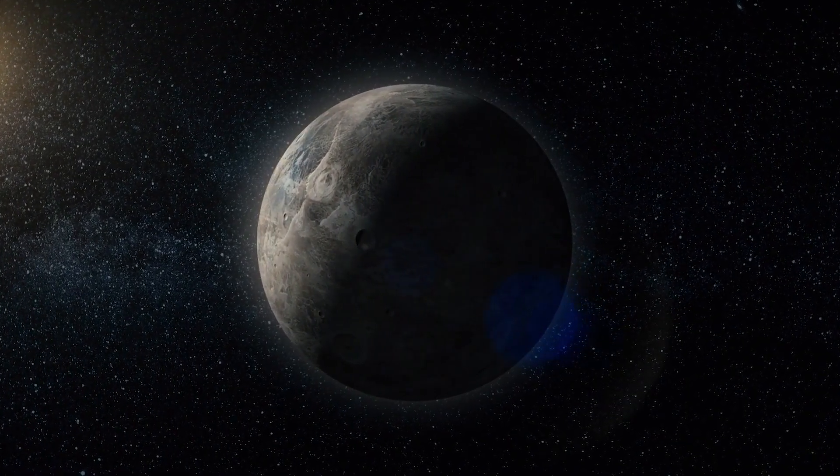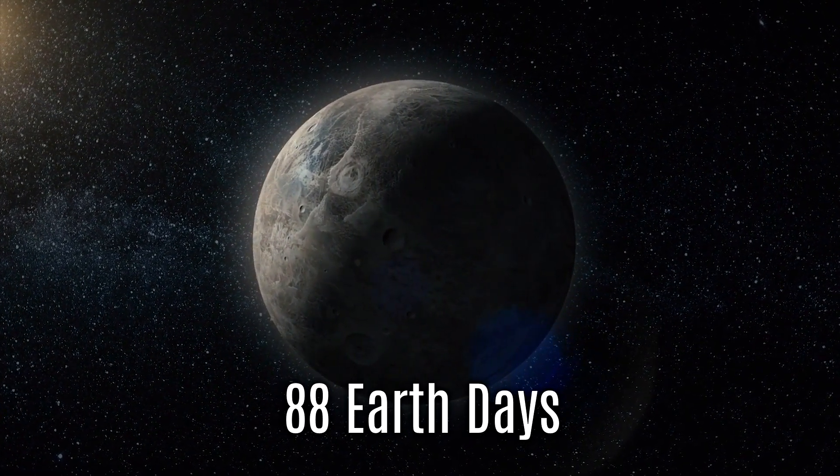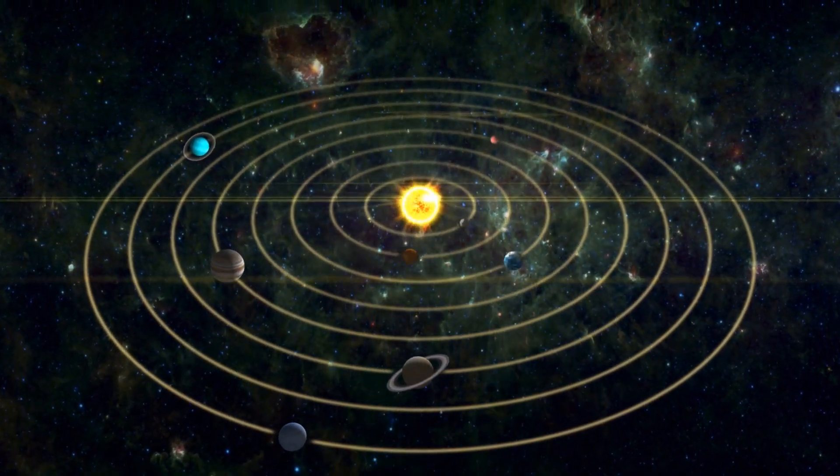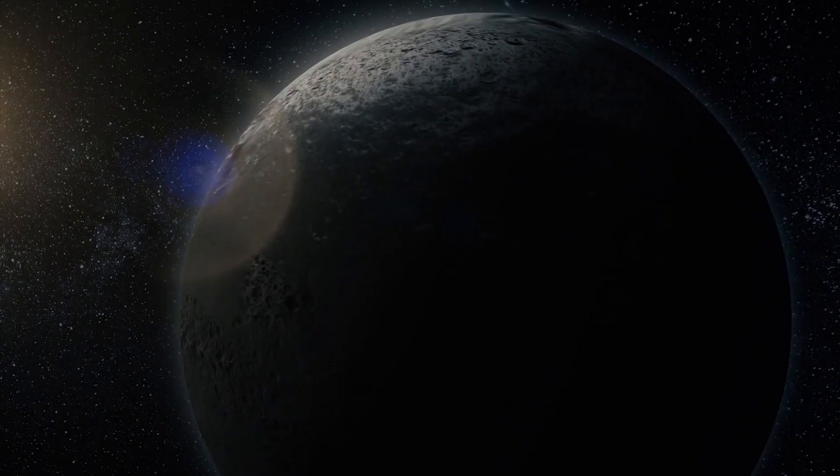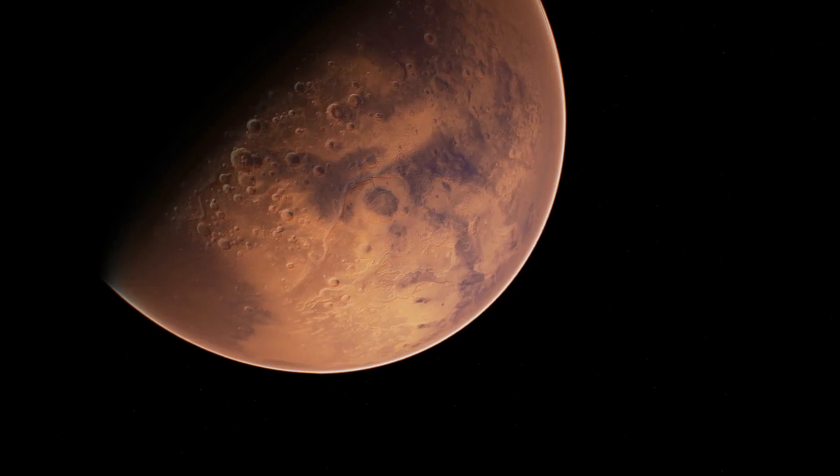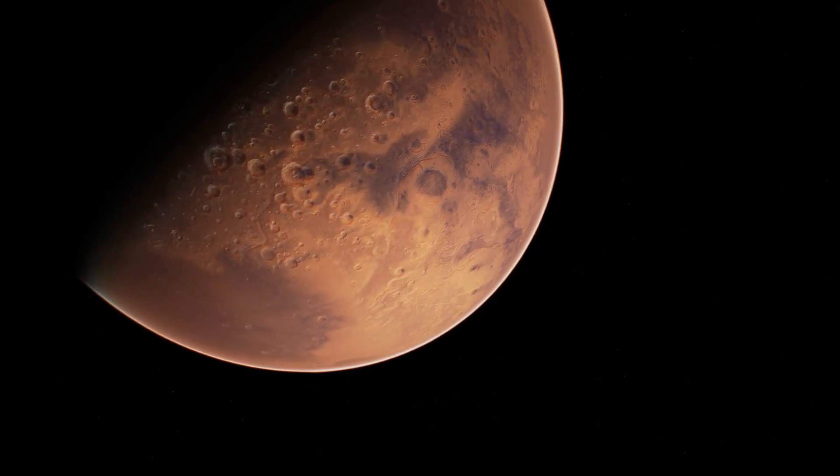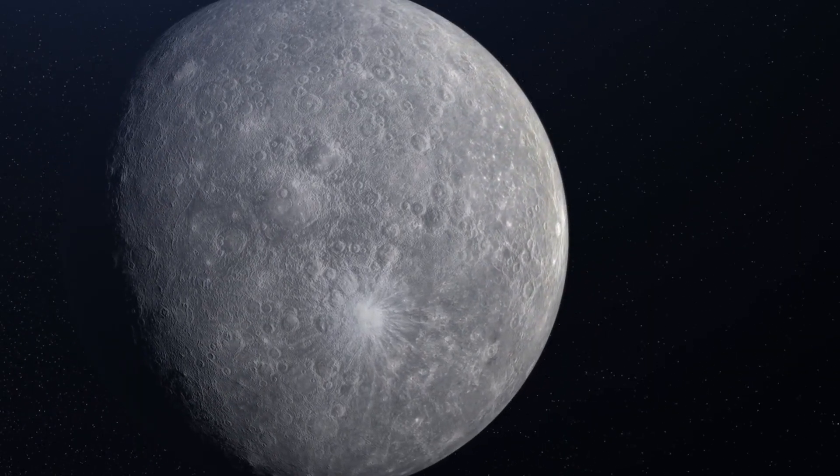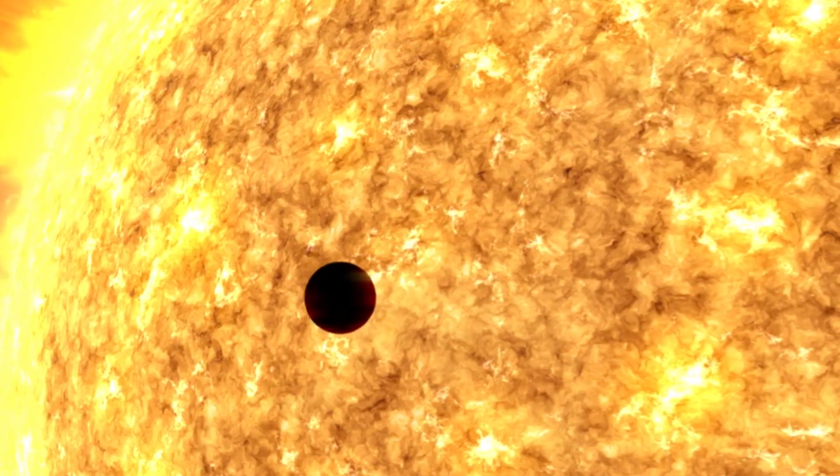To break it down, Mercury completes an orbit around the sun in just 88 Earth days. Because of this rapid orbit, a Mercurian year is much shorter than an Earth year. Yet, a single day on Mercury, a full rotation on its axis, lasts 176 Earth days. A year on Mercury is only half as long as a day.